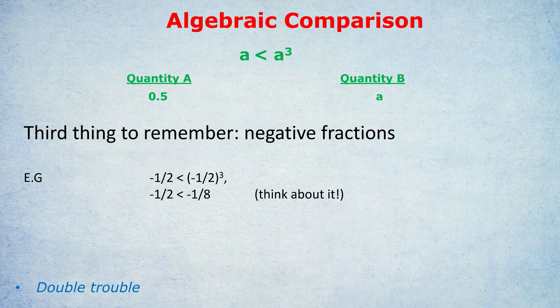So this inequality — A less than A cubed — isn't just true for positive integers like 2; it's also true for negative fractions. That's the fourth category. So the four categories to think about for algebraic comparison questions are: positive integers, positive fractions, negative fractions, and negative integers. Each is slightly different, and for higher-level GRE and GMAT questions you have to think about all four.